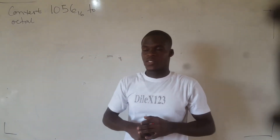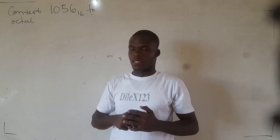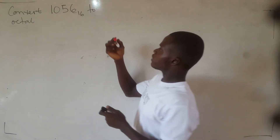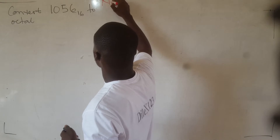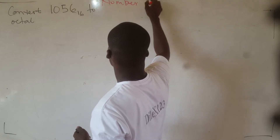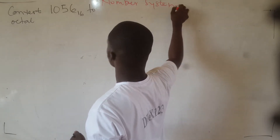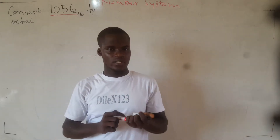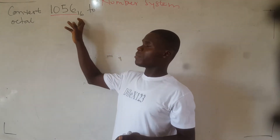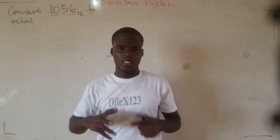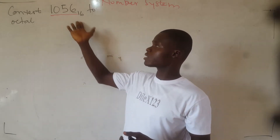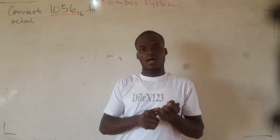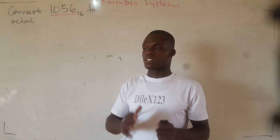Hello y'all, welcome to today's class on number systems. We have a question here, and we need to convert the number on the board — that is 1056 in base 16. Base 16 is also called hexadecimal. Now we have to convert it to octal, which means converting to base 8.